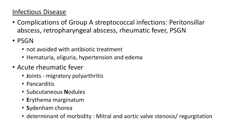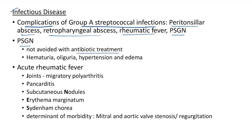Infectious diseases — complications of group A streptococcal infections include peritonsillar abscess, retropharyngeal abscess, rheumatic fever, and post-streptococcal glomerulonephritis. Post-streptococcal glomerulonephritis cannot be avoided even with antibiotic treatment. Features include hematuria, oliguria, hypertension, and edema.